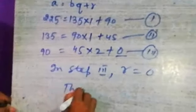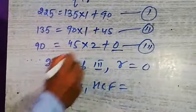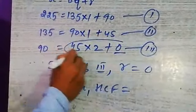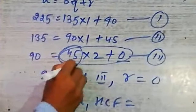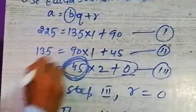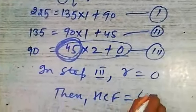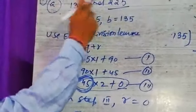Then HCF is equal to what? In third step, remainder is 0. In this step, 45 in place of B. So 45 is called HCF of 225 and 135. Understand?